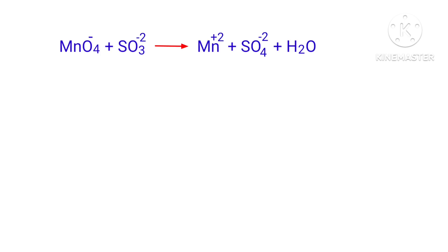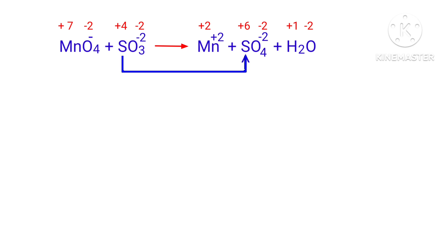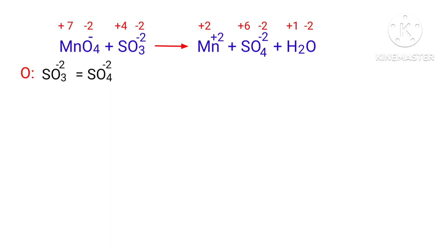Figure out the reducing and oxidizing agents using the rules for assigning oxidation numbers. In this equation, sulfur has a charge of +4 and is changing to +6, so sulfur is being oxidized. Manganese has a charge of +7 and is changing to +2, so manganese is being reduced.